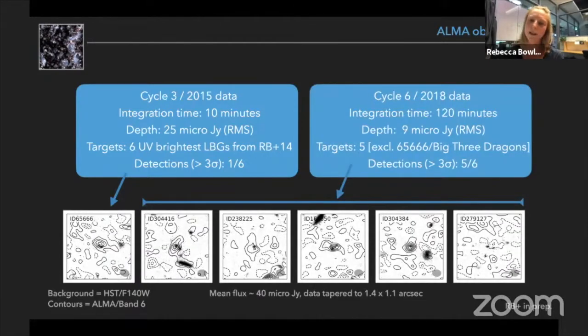So in cycle six we got much deeper observations, 120 minutes per source of the five undetected objects, and you can see the results of this in the panels on the bottom. So the background is the Hubble data which is the rest frame UV, and the contours is the dust continuum emission from ALMA.